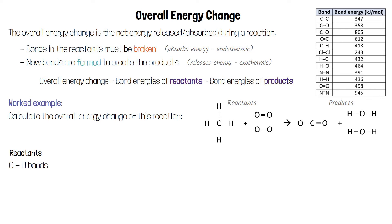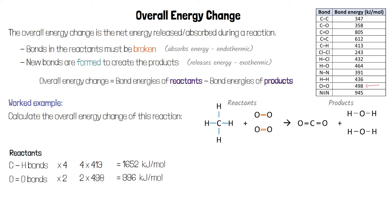We'll start with the reactants. There are 4 carbon-hydrogen bonds in methane; each has a bond energy of 413 kJ per mole, so 4 times 413 means we need to put in 1,652 kJ per mole to break those bonds. We also have 2 oxygen double bonds, each requiring 498 kJ per mole to break. 2 times 498 gives 996 kJ per mole. The total bond energies for the reactants is 1,652 plus 996, which is 2,648 kJ per mole.